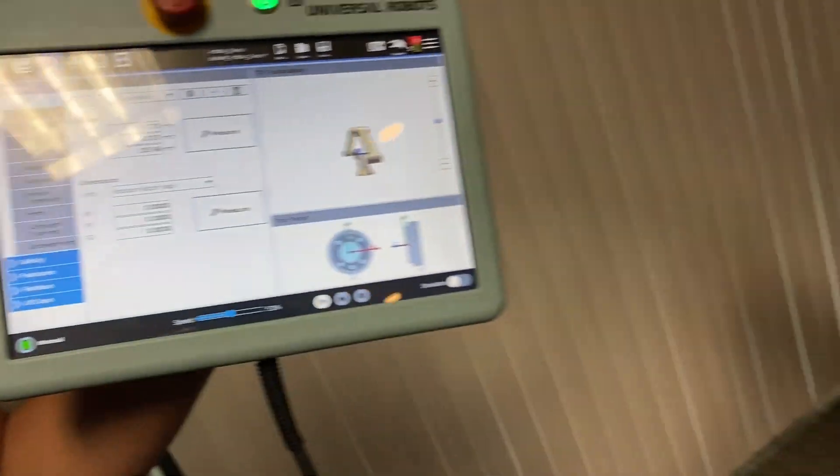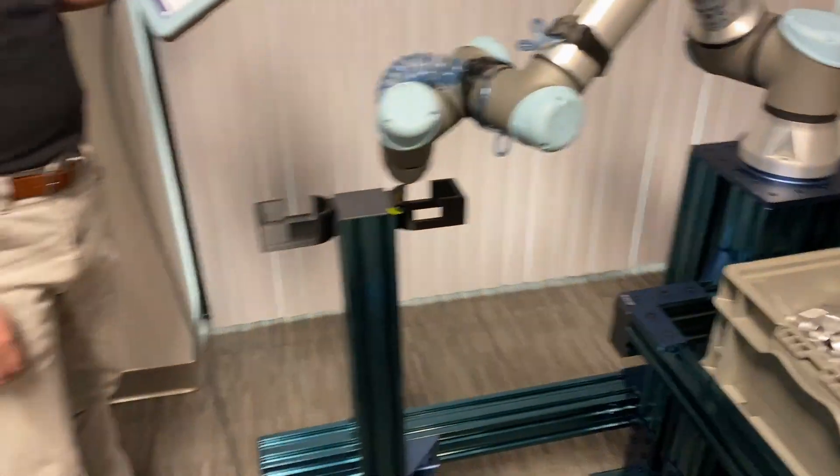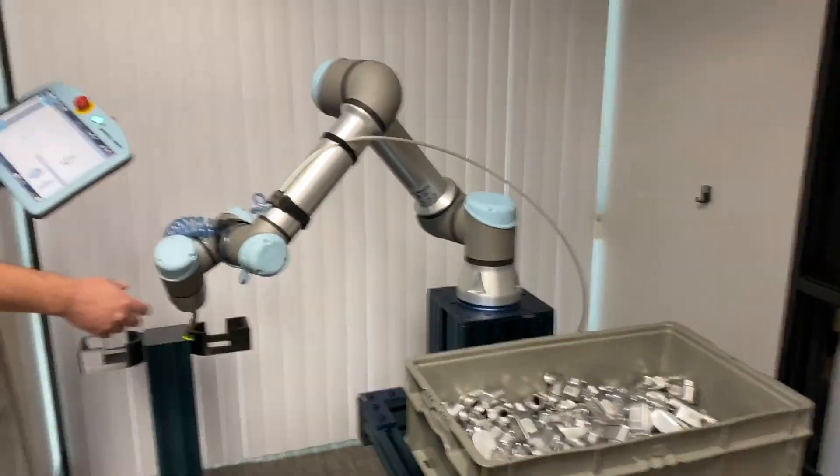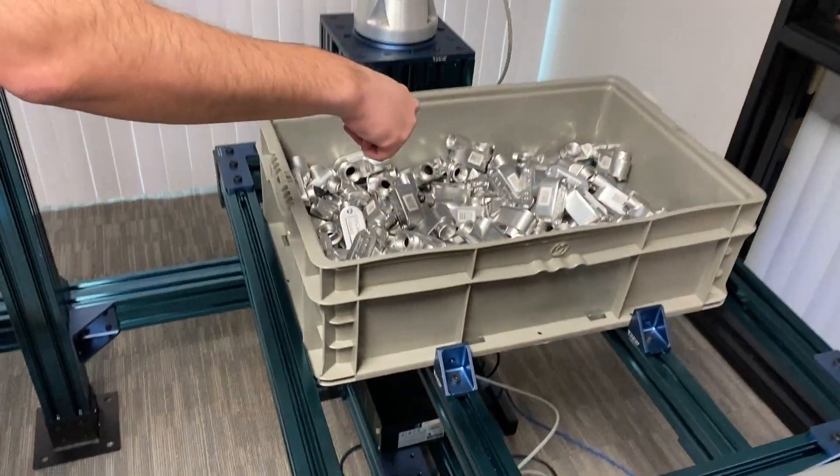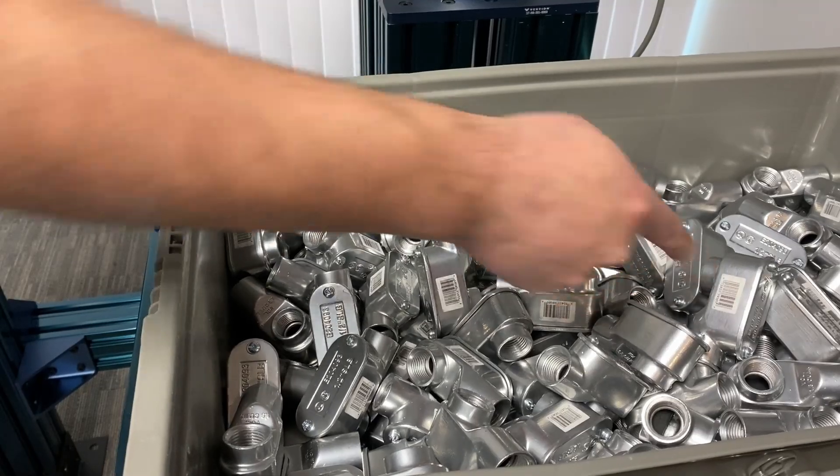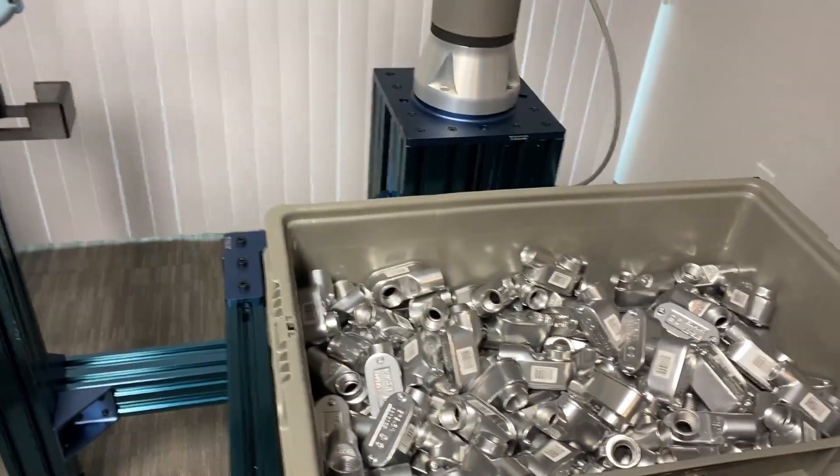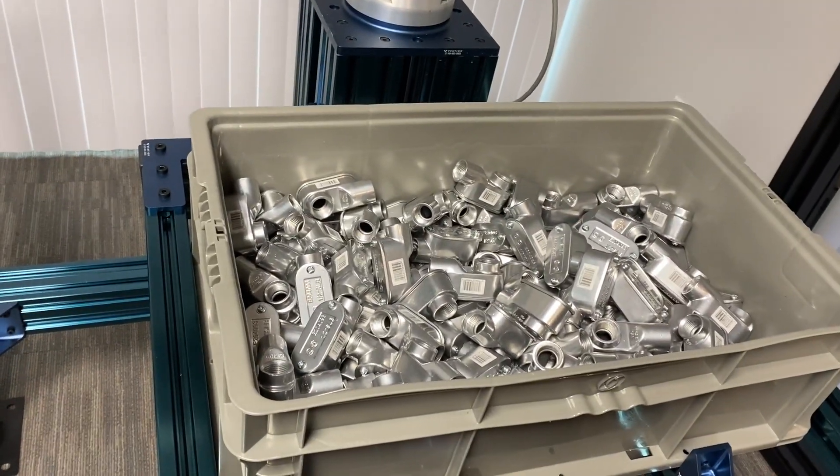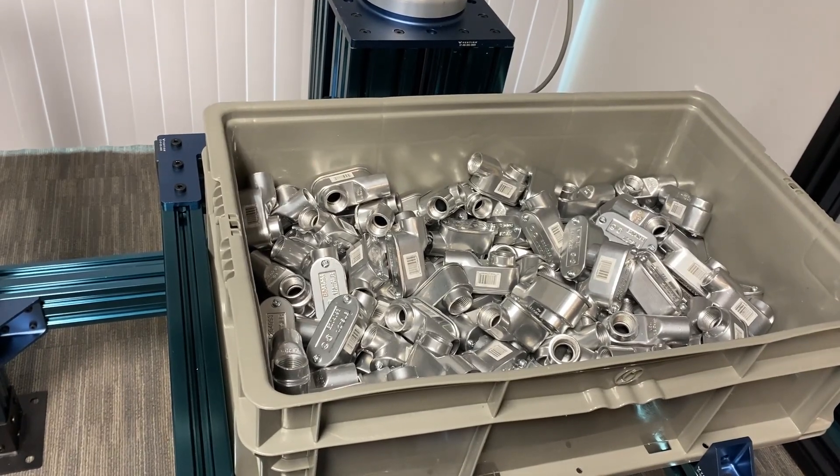So that tool center point is what we'll be aiming at the target area of the part, correct? Exactly. So when we come in here to pick these parts in the different ways we want to pick them, just the end of the suction cup, right in the middle of that suction cup, is what's going to hit that part.